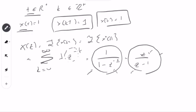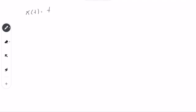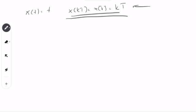Now let's go to the ramp function. X of T equals T. Now we need to be more careful. If I sample it and obtain X of KT, which equals X of K for each K, that equals K times capital T. When I sample, I need to keep capital T, which is the sampling time — sampling time will be important in the Z-transform. If I take the Z-transform of a sampled ramp function, I obtain from K equals 0 to infinity, K times T, times Z to the power of minus K.